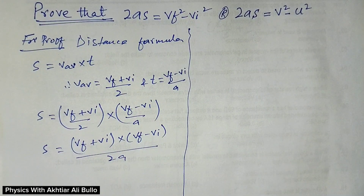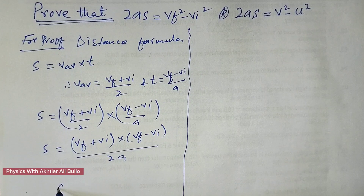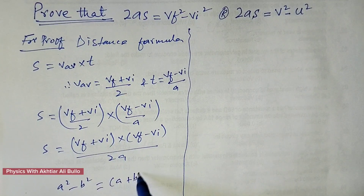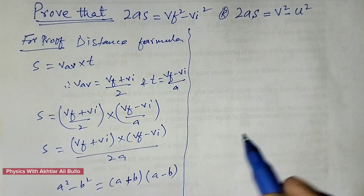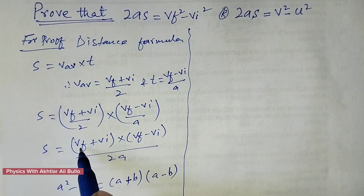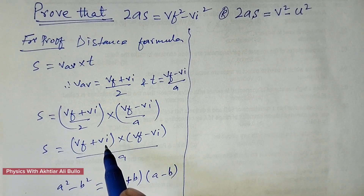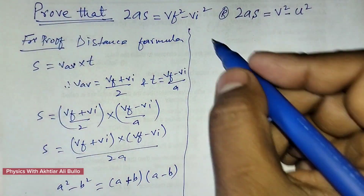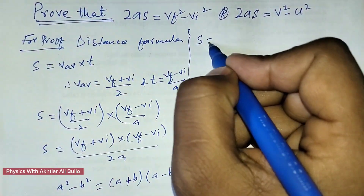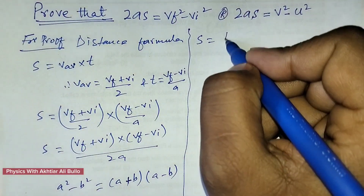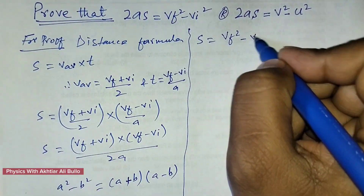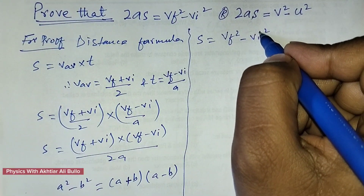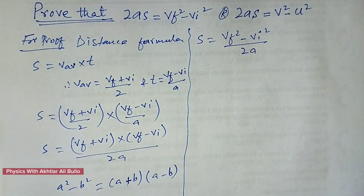This gives us Vf squared minus Vi squared upon 2A, using the identity A squared minus B squared equals A plus B into A minus B, where here A is Vf and B is Vi. So we can write S is equal to Vf squared minus Vi squared upon 2A.